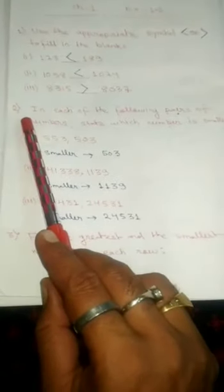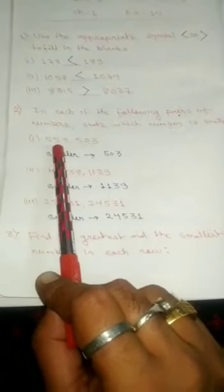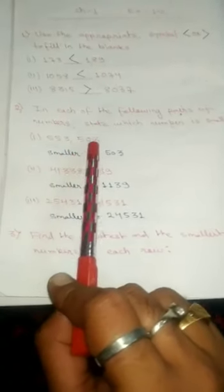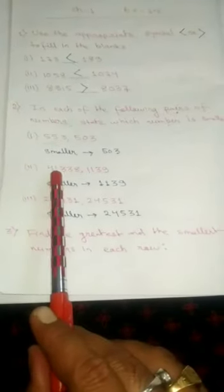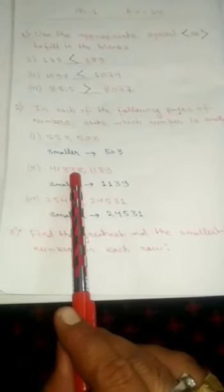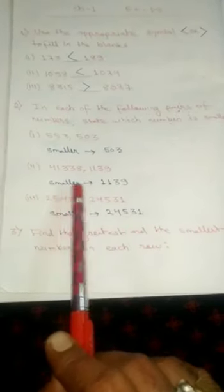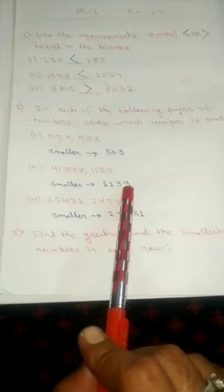Question number 2: In each of the following pairs of numbers, state which number is smaller. First question: 553 vs 503 — the smaller is 503. Second question: 41,338 vs 1,139 — the smaller is 1,139.